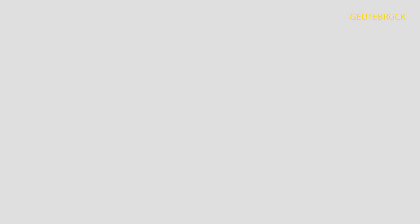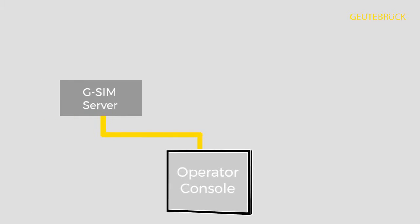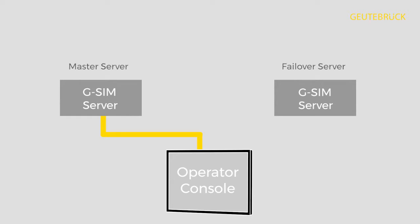This will only work as long as your system runs stable and continuously. The function server failover can achieve this. G-SIM is installed on one server, and a second server with identical installation runs in parallel in the network. Both servers permanently communicate in order to check the availability.